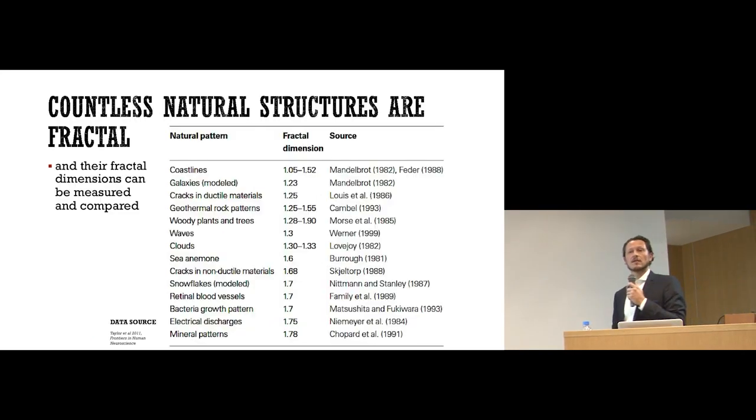But in fact, as I mentioned in the beginning, almost everything we see in nature is fractal in some way or another, in different level of complexity. And here are a bunch of things. So coastlines at the top, galaxies, that's a cool one. What else do we want to look at? Trees and plants, waves and clouds, sea anemones, that's a good one. Down here, the way bacteria grow, electrical discharges. So many structures in nature are fractal.